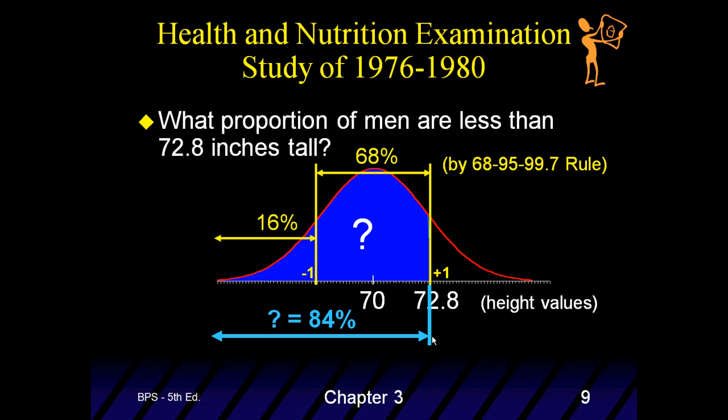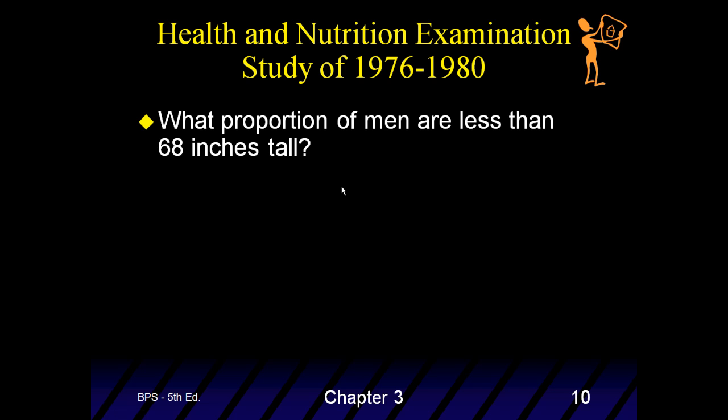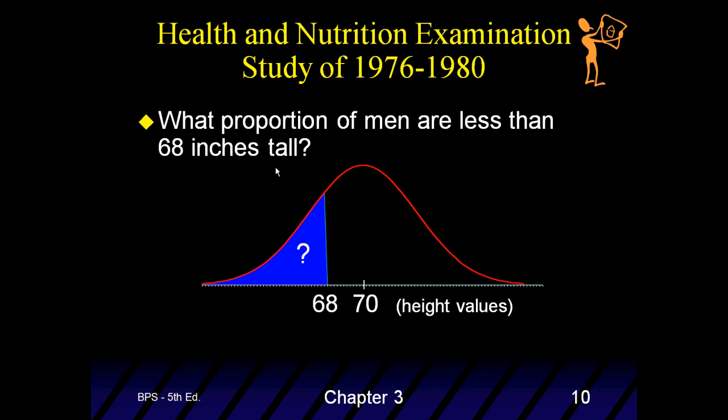So, if we add those up, we get 84%. So, 84% of the men in America, at this time, were shorter than 72.8 inches tall. 84%. So, anybody above, you can tell now there's going to be 16% of the population is above this height. So, that one is able, you are able to do this by just manipulating the normal distribution curve with percentages. But, sometimes you don't have a question that falls nicely on a standard deviation. What proportion of men are less than 68 inches tall? So, it looks like this. Here's your 70. The mean? 68%. Now, that's not a standard deviation away.